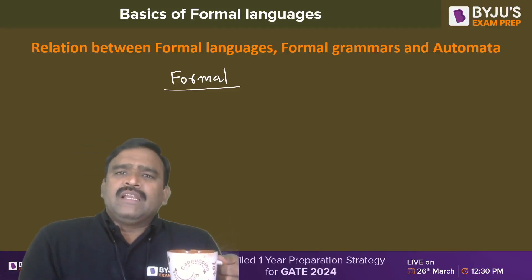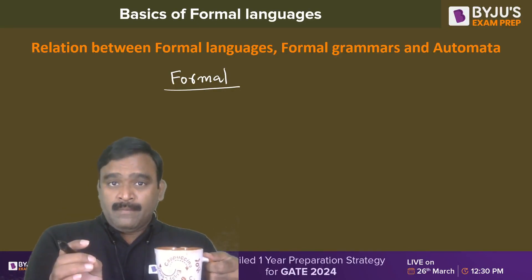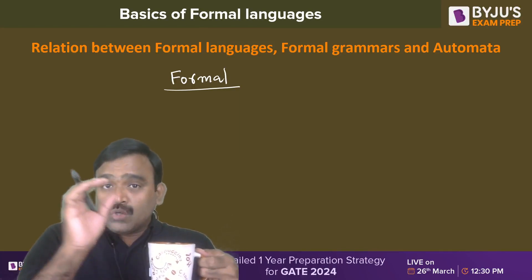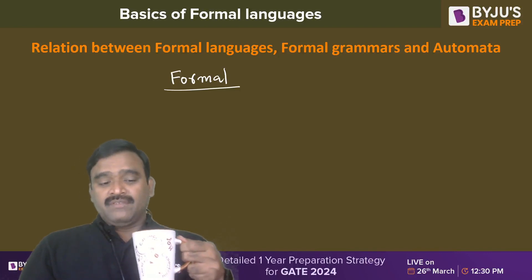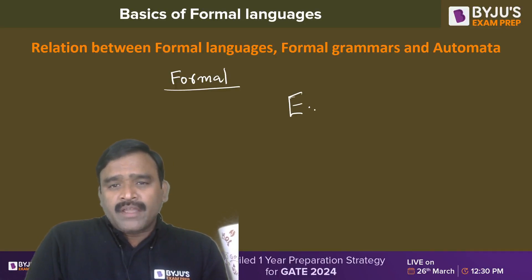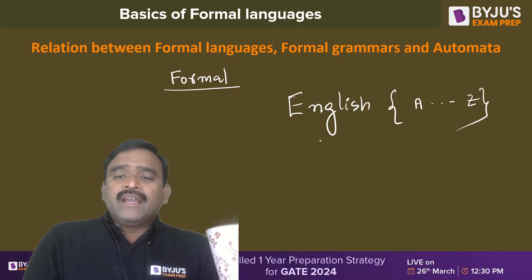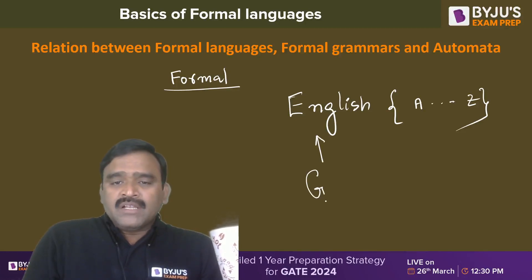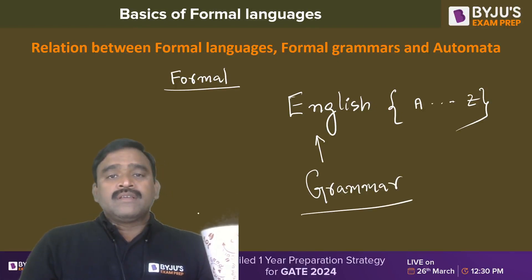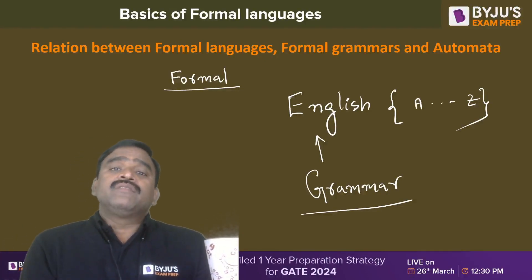In India there are many languages, but not all are formal languages. Languages which have a script and a proper grammar are considered formal languages. For instance, English is a formal language — its alphabet is A to Z, and it has a grammar. Grammar is nothing but a set of rules we follow for framing the sentences of a language. English, Hindi, and Telugu all have grammars; every language will have a grammar.